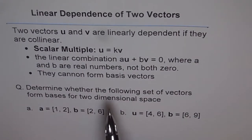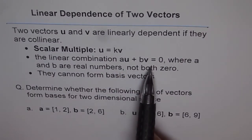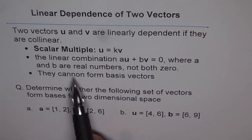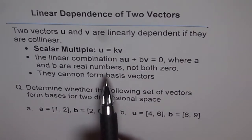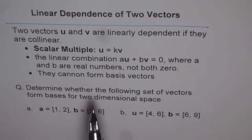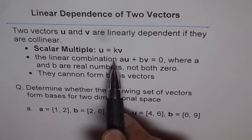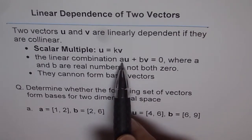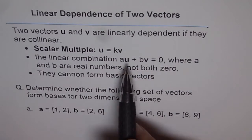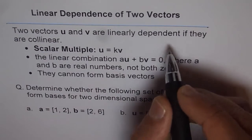Another way of saying the same thing is that the linear combination au plus bv equals zero, where a and b are real numbers not both zero. If you can have a linear combination equal to zero for a set of vectors, then those vectors are linearly dependent. This will be zero only if the two vectors are parallel or collinear; otherwise it will result in a third non-zero vector. So the resultant of two vectors can be zero only if they are collinear.